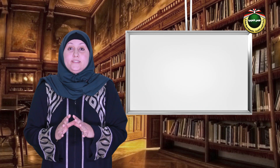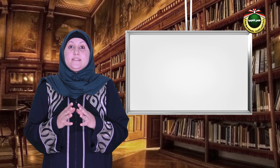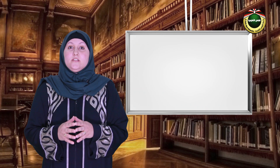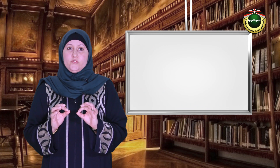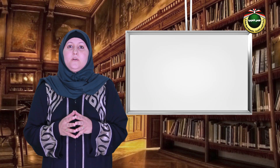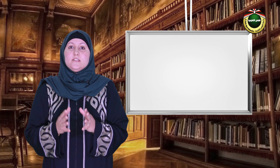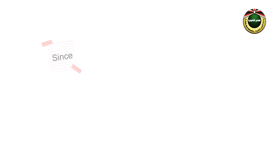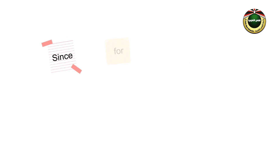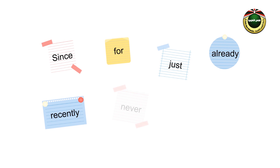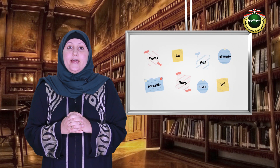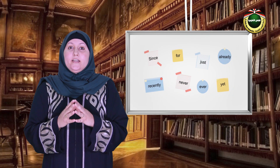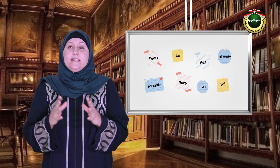Before we take some examples, it is good to know that there are some keywords that usually come with the present perfect tense, such as the following: since, for, just, already, recently, never, ever, and yet. Now, it's time to take a look at some examples.